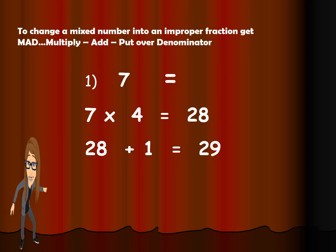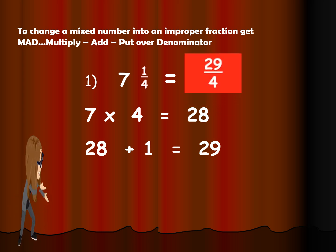Okay, now class, let us check your answer. Let us see if this is correct. So 7 times 4 is 28, and 28 plus 1 is 29. Correct. Your answer is correct.